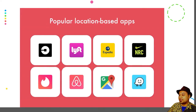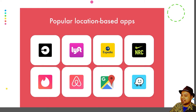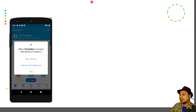These are the most popular location-based applications. We can see popular logos including Uber, Lyft, Expedia, Google Maps, Waze, and others — applications that make use of location awareness.